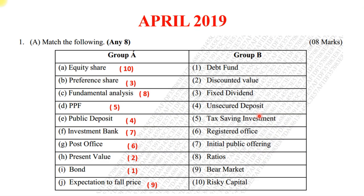First, April 2019 — the very first question was Match the Column. The answers: equity share was 10 (risky capital), preference share is 3 (fixed dividend), fundamental analysis is 5 (ratios), PPF is 5 (tax saving investment), public deposit is 4 (unsecured deposit), investment bank is 7 (initial public offering), post office was 6, present value was 2 (discounted value), bond is 1 (debt fund), and expectation of fall is 9 (bear market).